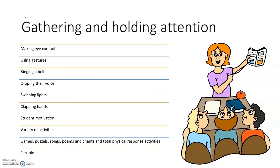When it comes to holding attention, if students get bored, they lose their interest and stop paying attention. Therefore, one of the most important aspects is student motivation. To break monotony and attract students' attention, you need to provide a variety of activities. Activities that work well include games, puzzles, songs, and basic total physical response activities. Teachers have to be flexible and should be able to move on to the next activity when they see students getting bored.